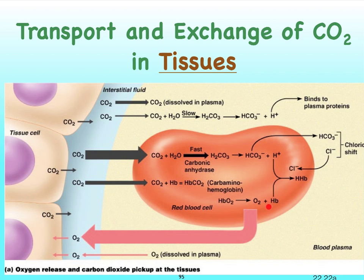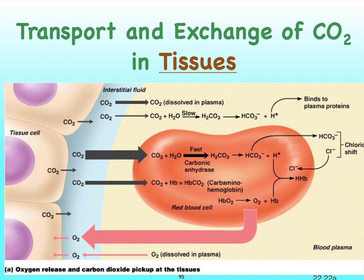Let's remember this deoxyhemoglobin, which is eventually going to bind a hydrogen ion to form HHb. That hydrogen ion relates to carbon dioxide. First off, a relatively small amount of carbon dioxide — 7 to 10% — will dissolve in the blood plasma, which is much more than how much oxygen can dissolve. Another 20% will diffuse readily into our red blood cells, where it will bind with hemoglobin to form carbaminohemoglobin, or HbCO2.